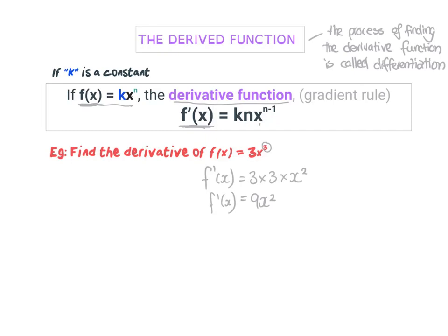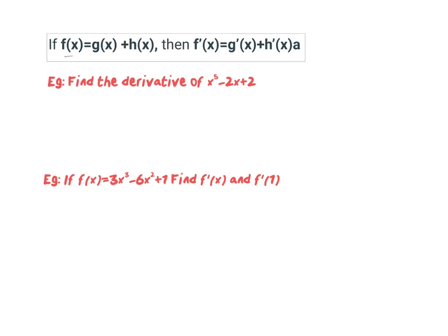This was easy when you just have one term in your original formula. But what happens when we have more than one term? If we have a rule with one term plus another term, you find the derivative by doing that process on each term. So if f(x) is x⁵ minus 2x plus 2, the derivative: for x⁵ it's 5 times 1 giving 5x⁴. For the next term, there's an assumed power of 1, so it's 1 times negative 2 which is negative 2, and reducing the power by 1 gives x to the power of 0.